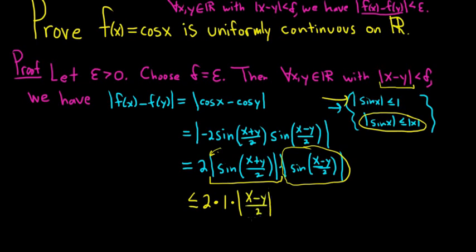You can bring the 2 out of the absolute value and cancel it, so it's no issue. So this is equal to the absolute value of x minus y. And we know that the absolute value of x minus y is less than delta. And we said that delta was equal to epsilon. And that completes the proof.